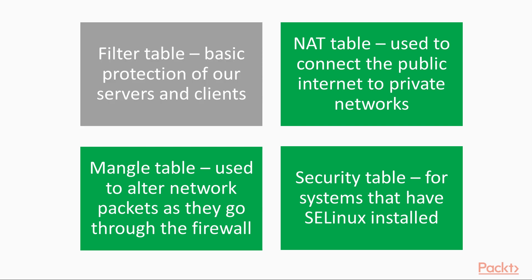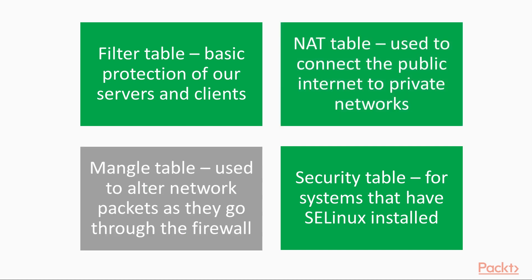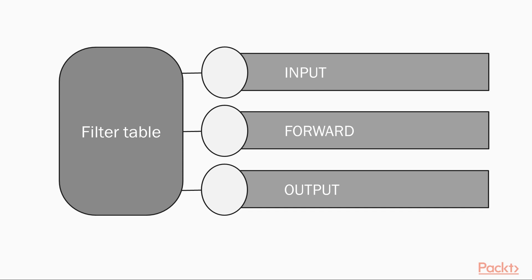The Filter table is for basic protection of our servers and clients — this is the only table we would normally use. The NAT table, or Network Address Translation, is used to connect the public internet to private networks. The Mangle table is used to alter network packets as they go through the firewall. The Security table is only used for systems that have SELinux installed. Since we're currently only interested in basic host protection, we'll only look at the filter table.